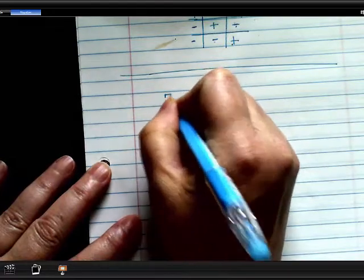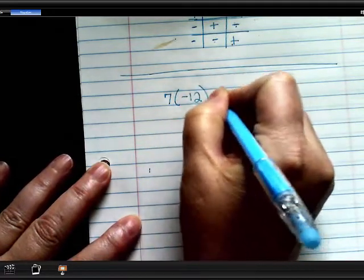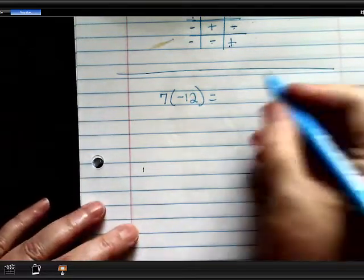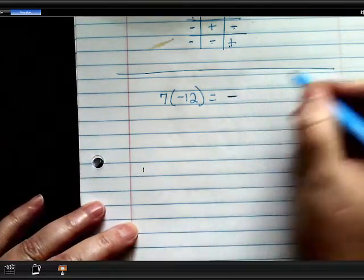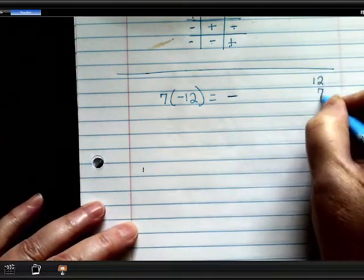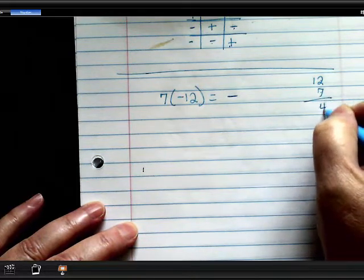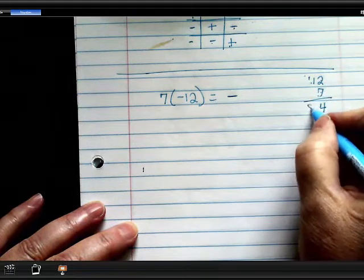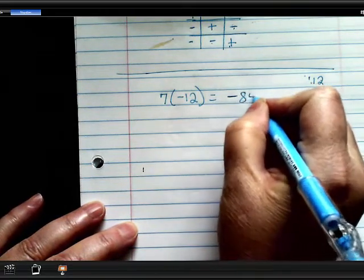Alright, so let's do 7 times negative 12. Now, before we do anything, is your answer negative or positive? It's going to be negative. So this is 12 times 7. 7 times 2 is 14. Carry the 1. 7 times 1 is 7 plus 1 is 8. So it's negative 84.